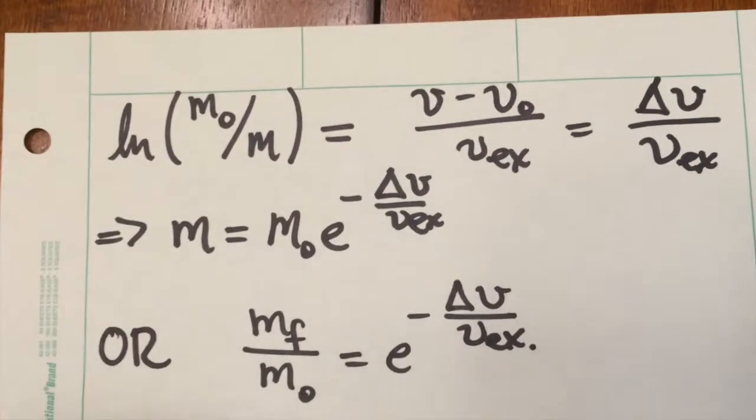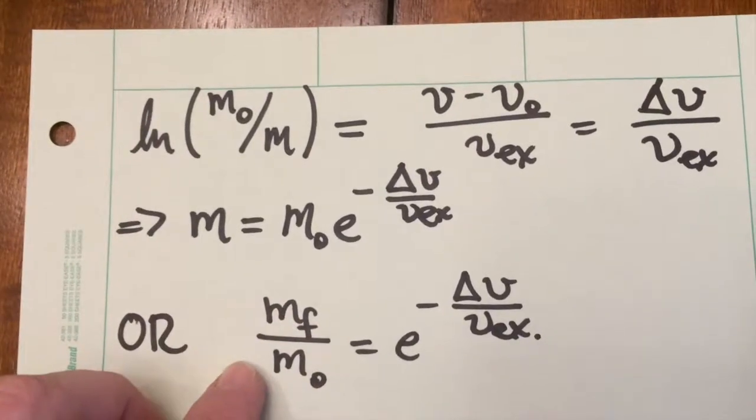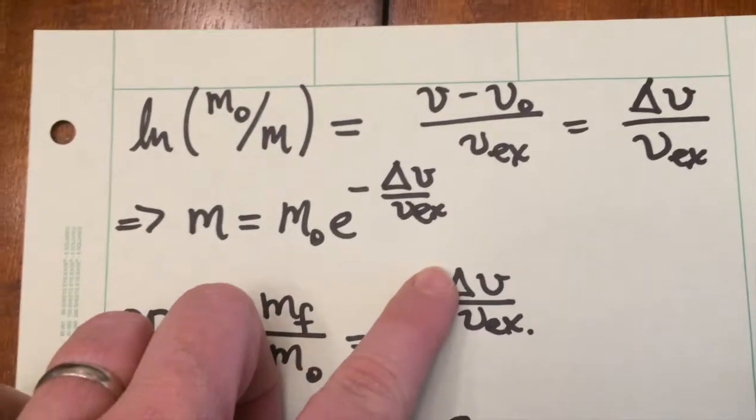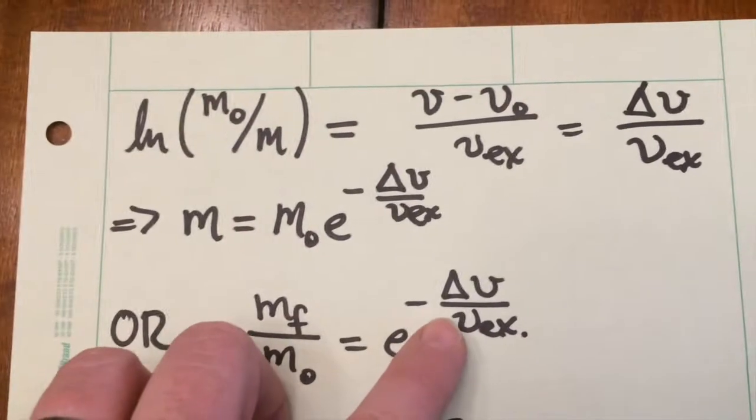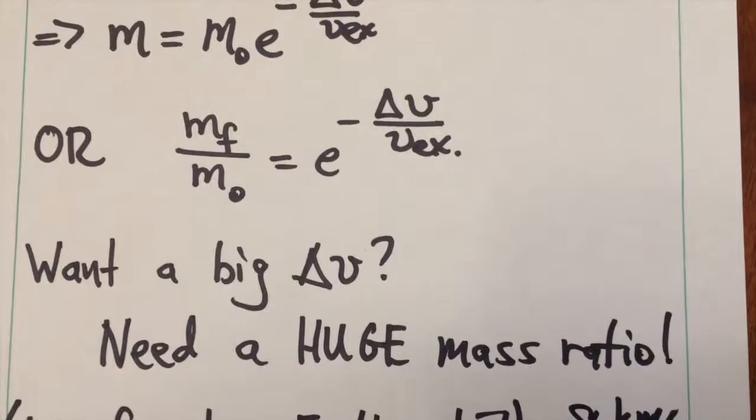In other words, the mass ratio between the final mass for our rocket and its initial mass is equal to this exponential of the change in the velocity that we need divided through by the exhaust velocity, with the minus sign out front.